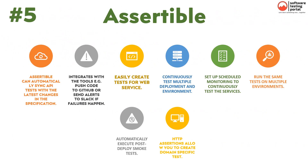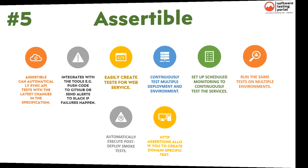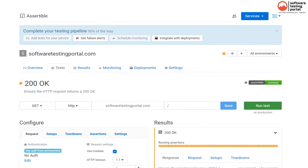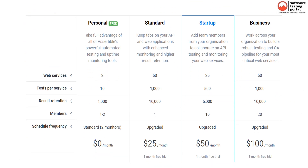The fifth API testing tool is Assertable. It can automatically sync API tests with the latest changes in the specification. It integrates with tools such as GitHub or Slack if failures happen. Features include: easily create tests for web services, continuously test multiple deployments and environments, set up scheduled monitoring, run the same tests on multiple environments, and automatically execute post-deploy smoke tests. This page shows the user-friendly UI of test results and the latest pricing plan.